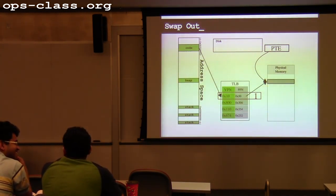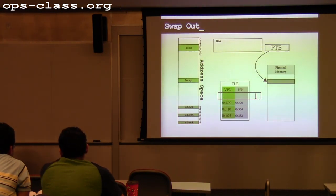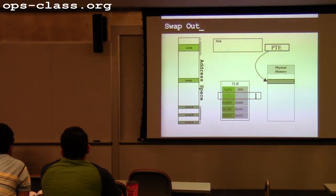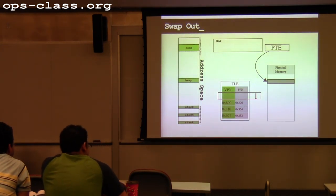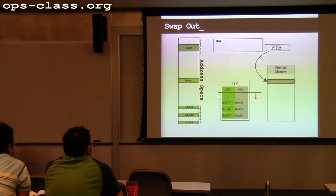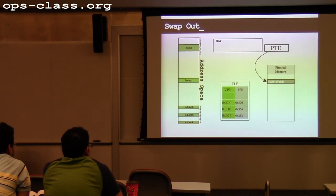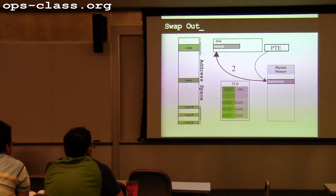Back to the swap-out example: I've made the potentially ill-guided decision to remove an entry with a valid mapping. After getting the mapping out of the TLB, the next thing is to start writing the contents out to disk. How long does this take? A long time. Once this disk I/O starts, the process doing the swapping will go to sleep. The worst case is that this process starts running again and faults on this address while the page is still being written to disk.